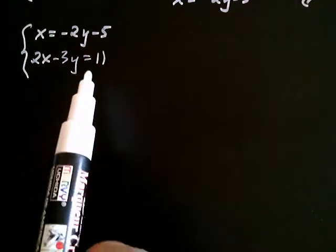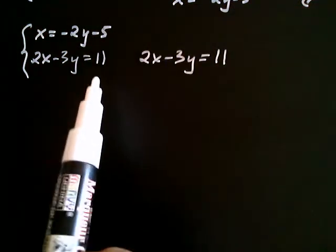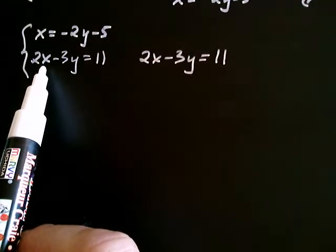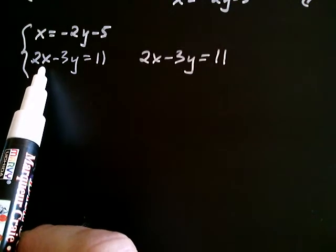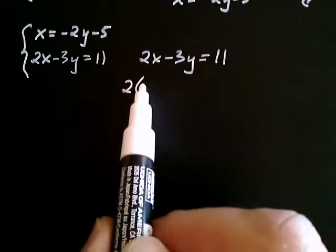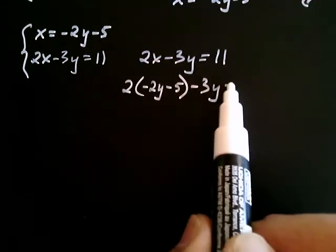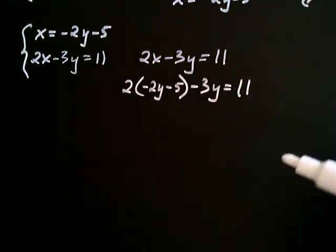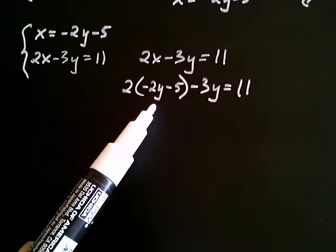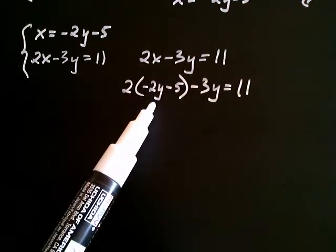That x must equal negative 2y minus 5 as well. So I take the second equation, 2x minus 3y equals 11, and replace x with negative 2y minus 5. The two remains, it becomes 2 times (negative 2y minus 5), and I still have minus 3y equals 11. That's why this is called the substitution method — you're replacing the variable with an expression you found from the other equation. At this stage you should have an equation with only one variable.